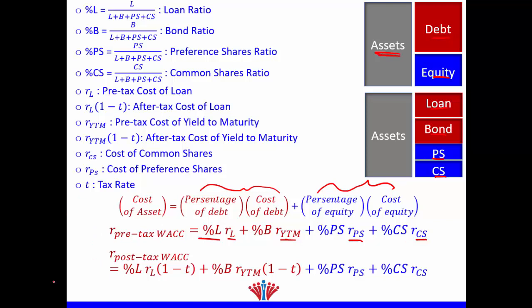In order to calculate after-tax WACC, remember that taxes affect debt only — not equity. Every time we use debt, either loans or bonds, we will pay lower taxes, which we call the tax shield. Therefore, for the cost of the loan (the interest rate on the loan), we multiply it by (1 − T); this is called the after-tax cost of loan. For the bond's yield to maturity, we multiply it by (1 − T); this is called the after-tax yield to maturity. Therefore, our post-tax WACC equals: percentage of loan × interest on loan × (1 − T) (the after-tax cost of the loan), plus percentage of bond × yield to maturity × (1 − T) (the after-tax yield to maturity), plus percentage of preference share × cost of preference share, plus percentage of common share × cost of common share. Taxes do not affect equity and therefore do not affect preference shares or common shares.